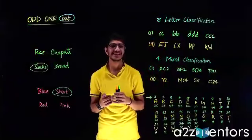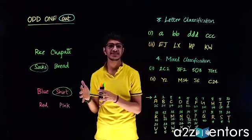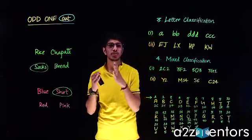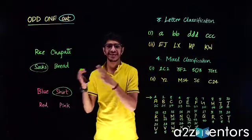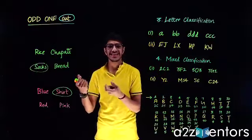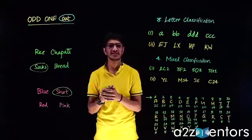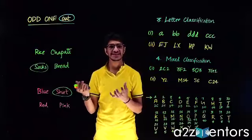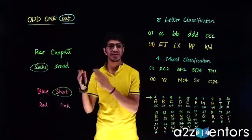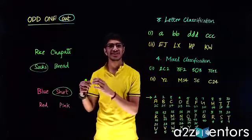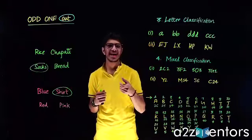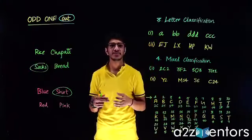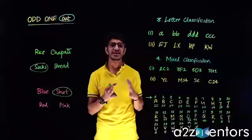The third type is letter classification. In letter classification, we have a group of letters or a set of groups of letters. For example, A and B are just individual letters, while AB, CD, EF together form a group of letters as one element. So we have either a set of individual letters or a set of groups of letters.